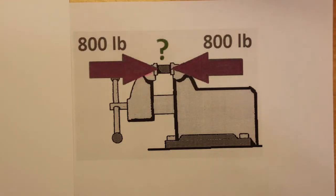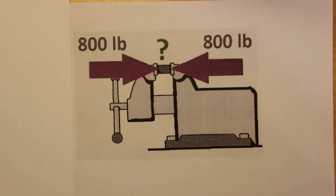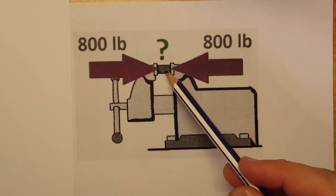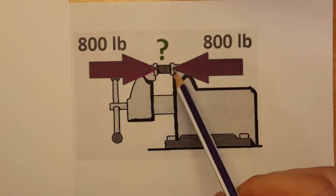This is a strength of materials problem and we're going to be working with axial loading and Poisson's ratio. The problem goes as follows: the short cylindrical block, this one right here, is made of aluminum and it has an original diameter of half an inch and a length of one and a half inches.